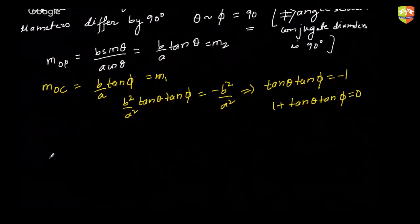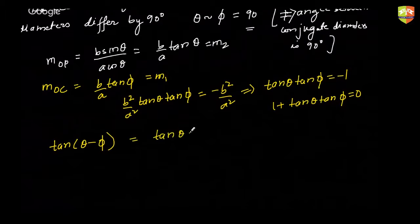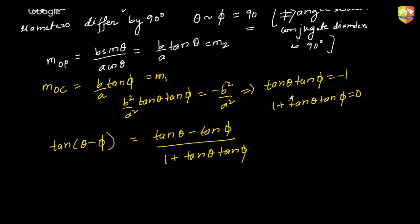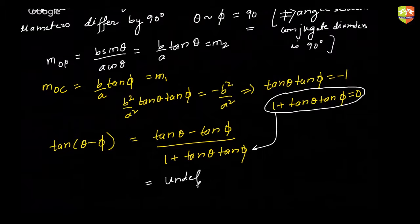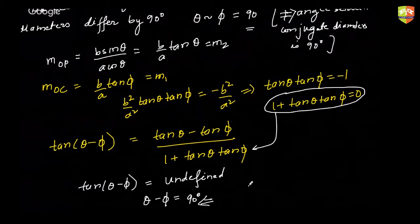Using the formula for tan(θ - φ), the denominator becomes zero since 1 + tan θ·tan φ = 0, making the expression undefined. This clearly implies that θ - φ is a multiple of 90 degrees, so we can say θ - φ = 90 degrees. Hence proved.